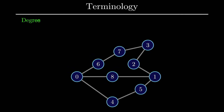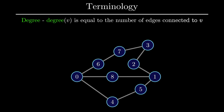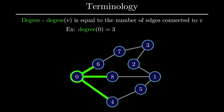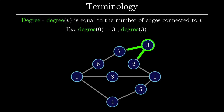A related concept is the degree of a vertex. The degree of a vertex is simply the number of neighbors it has. For example, the degree of vertex 0 would be 3, and the degree of vertex 3 would be 2.